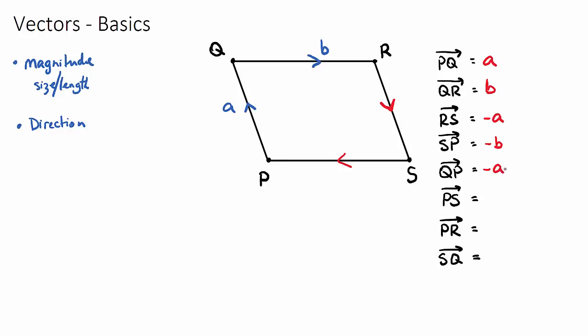If we want to go from P to S, that's going to be actually the opposite of S to P. So we already have S to P as negative B, the opposite of negative B is just B. And that's actually because P to S would be the exact same journey as Q to R. So this would just be B.